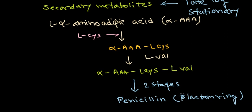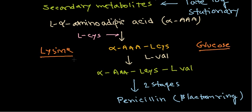There are some important controls in this biochemical pathway. Two such control factors are lysine and glucose. Lysine concentration plays a vital role: if there is a lot of lysine, it inhibits the production of penicillin — a negative regulation. This is because lysine is synthesized from a pathway involving L-alpha-aminoadipic acid, and lysine inhibits the enzyme homocitrate synthase, which is required during penicillin production.